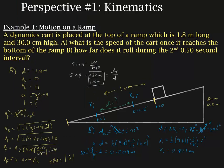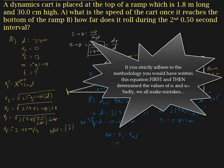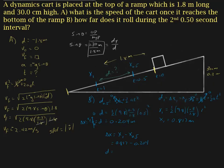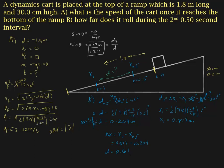Finally, the displacement between 0.5 seconds and 1 second is: Δx = x(1) − x(0.5) = 0.817 − 0.204 = 0.613 meters, so approximately 0.61 meters. That displacement is to the left, so you might write it as a negative value. If you had the ramp going in the other direction, it would be a positive value.